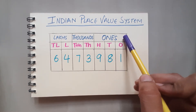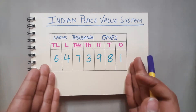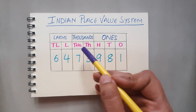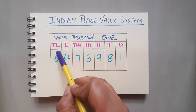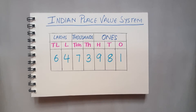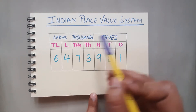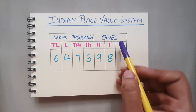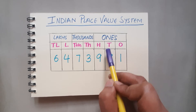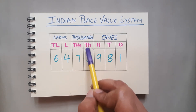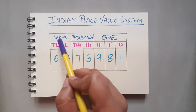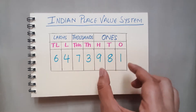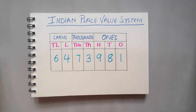As you all know, this is the Indian place value system. These are the places: ones, tens, hundreds, thousands, ten thousands, lakhs, and ten lakhs. These are the places we are going to learn about in Class 4. These are the periods — periods are groups of places. In ones period you have ones, tens, and hundreds. In thousands period you have thousands and ten thousands. In lakhs period you have lakh and ten lakh.